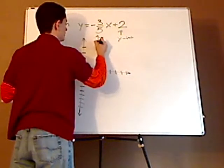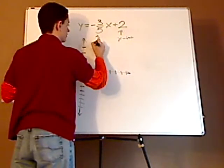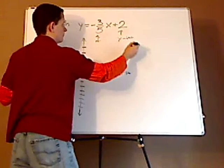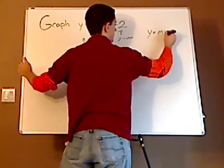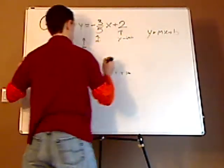So this is your M, which is your slope, and this is your B in the form of Y equals MX plus B.